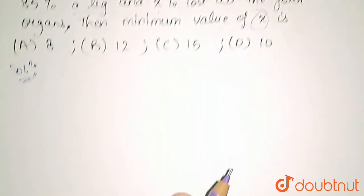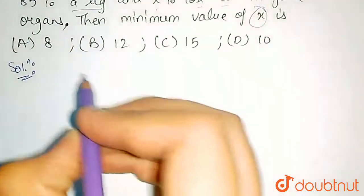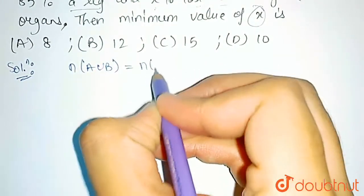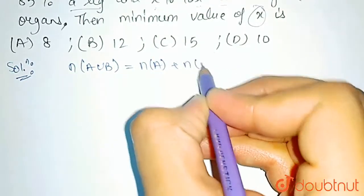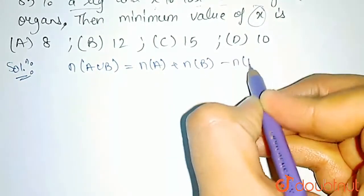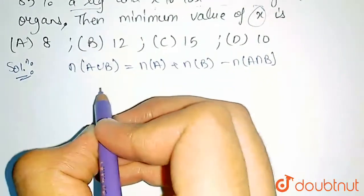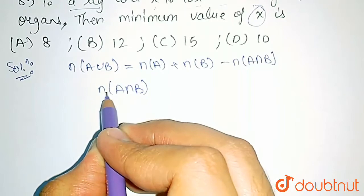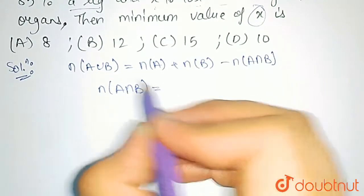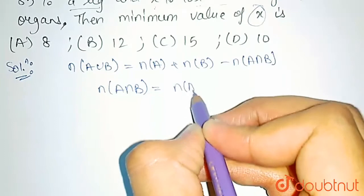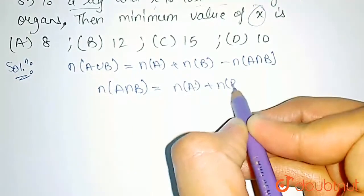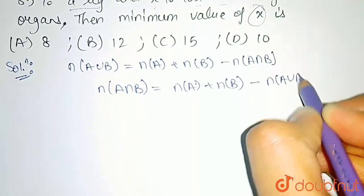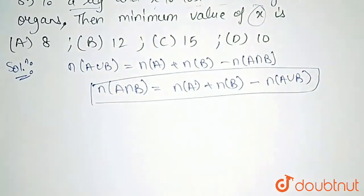Before moving toward the question, we know a formula that N(A union B) is equal to N(A) plus N(B) minus N(A intersection B). From here, we can identify that N(A intersection B) is equal to N(A) plus N(B) minus the total. This formula we will use in the question.